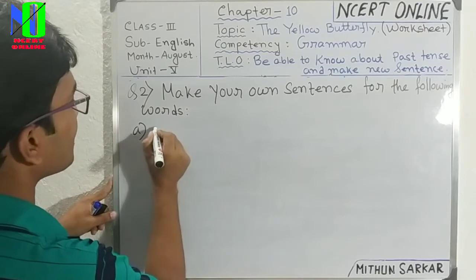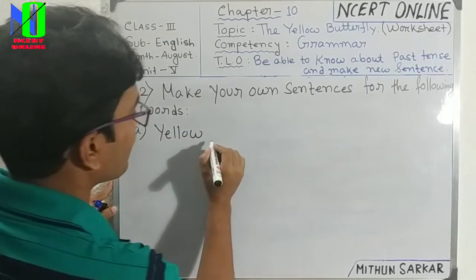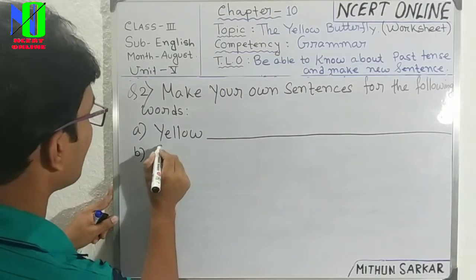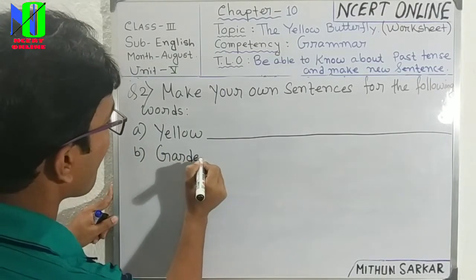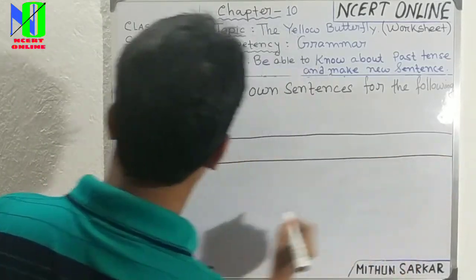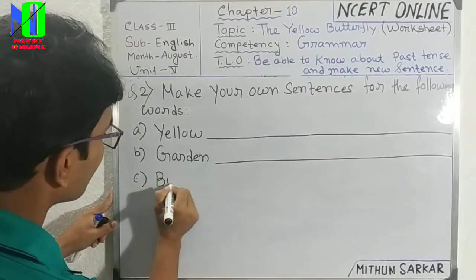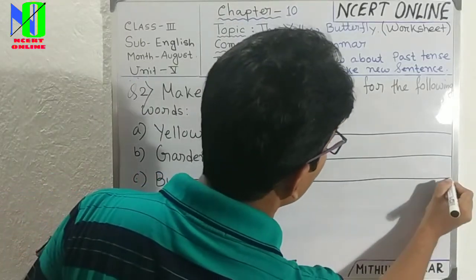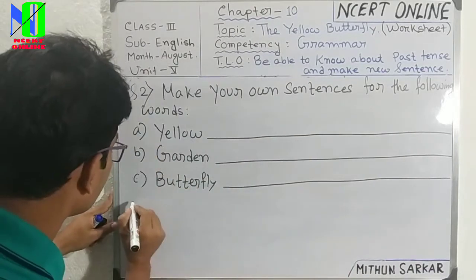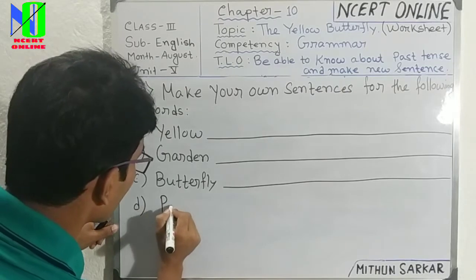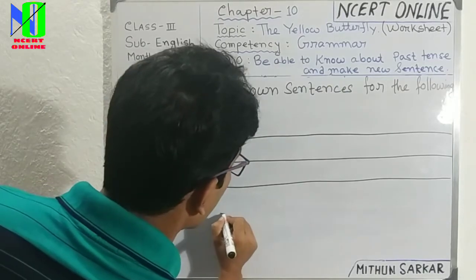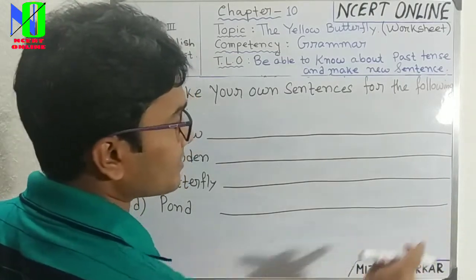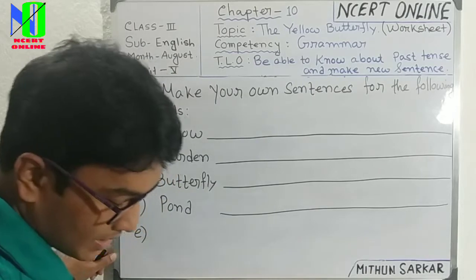Number A: yellow. Number B: garden. Number C and D: butterfly. Number D: want — or pond. I will give you five words as examples. You can also make other sentences and write them in the comment box. Then: escape.